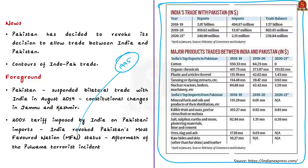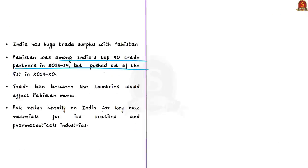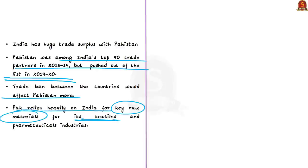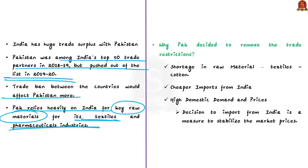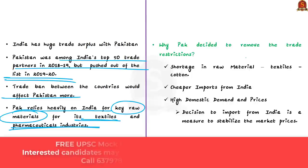Over the years, India has had a trade surplus with Pakistan — importing less and exporting more. Pakistan was among India's top 50 trade partners in 2018–19 but was pushed off the list in 2019–20. A trade ban was anticipated to affect Pakistan more, largely because Pakistan relied heavily on India for key raw materials, particularly for its textiles and pharmaceutical industries.